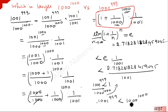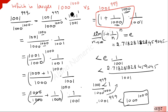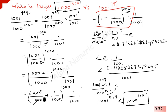So which is larger? 1000 to the power 1000 is the largest number. Thanks for watching — subscribe to our channel for more videos.